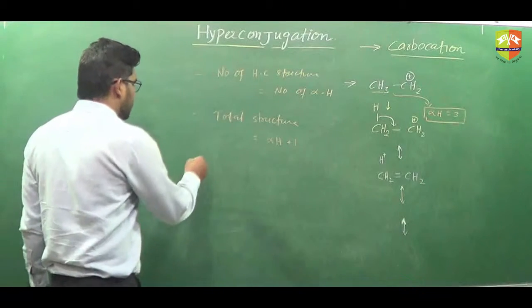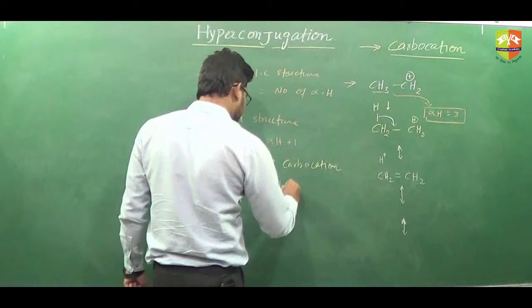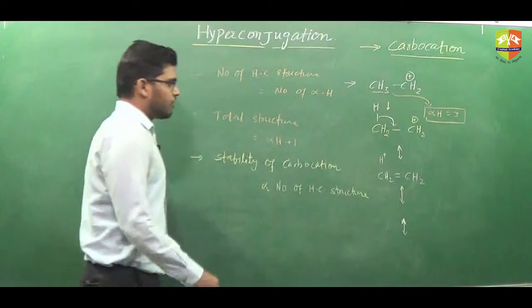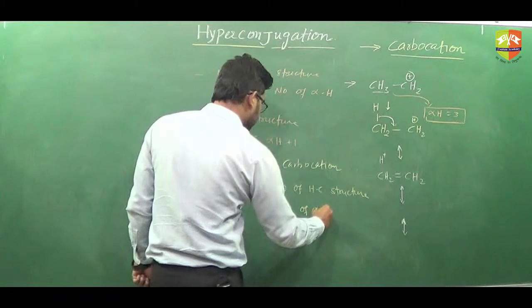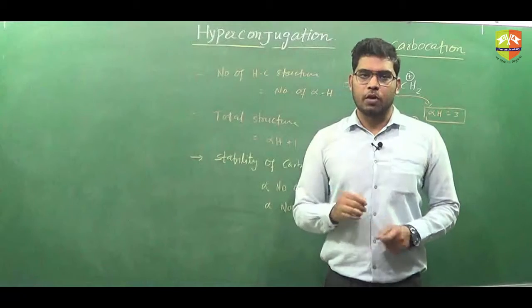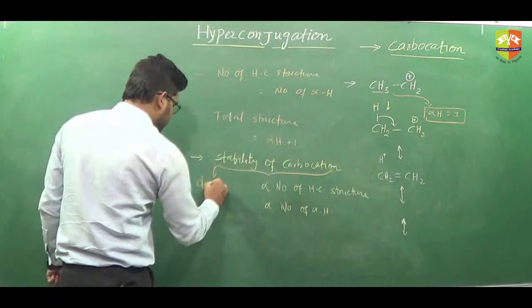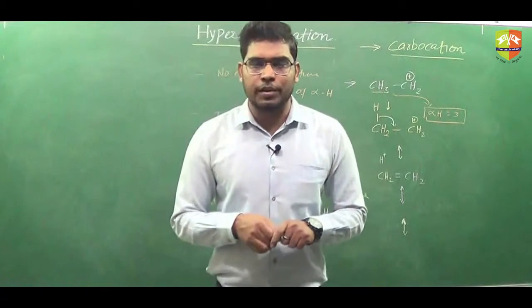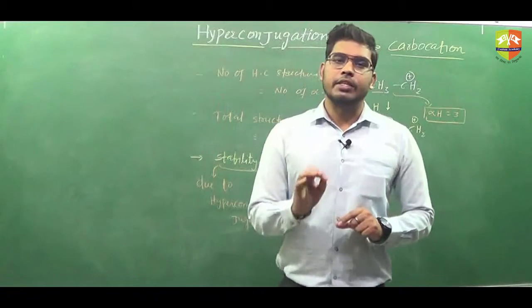The stability of carbocation is directly proportional to the number of hyperconjugative structures. Basically, the molecule which has more number of alpha hydrogens gives more stability to the carbocation — stability due to hyperconjugation. So if and only if hyperconjugation is possible, we will check the number of alpha hydrogens, and if the number of alpha hydrogens is more, more will be the stability of carbocation.